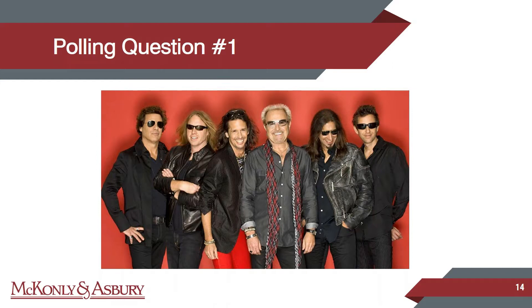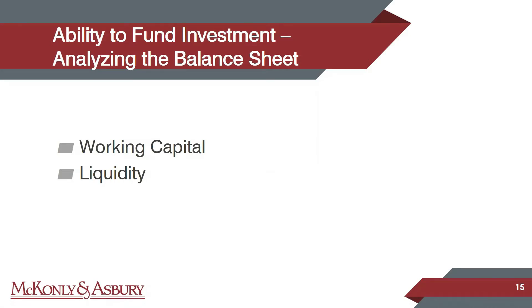Now we're onto the balance sheet — the two fundamental things driving cash flow and lending analysis are working capital and liquidity. Why are those important to banks? The obvious answer is they want to make sure you're able to meet your debt obligations, and the working capital piece shows you have skin in the game — you are actively participating in the business. Banks, under tight regulations today, look for those two things above all else.